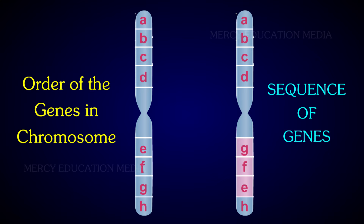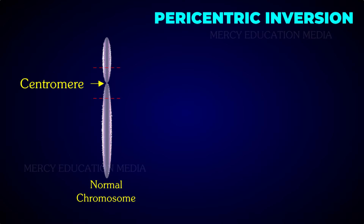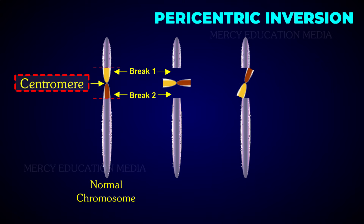Due to aberration, the sequence of the genes becomes A, B, C, D, G, F, E, and H. There are two types of inversion: pericentric and paracentric inversion. In pericentric inversion, the inverted segment of the chromosome contains the centromere. Sometimes it is responsible for the evolution of the organism.